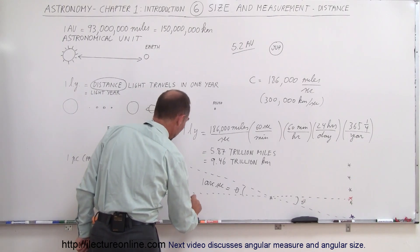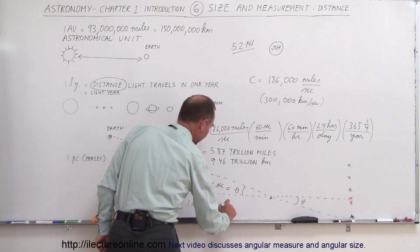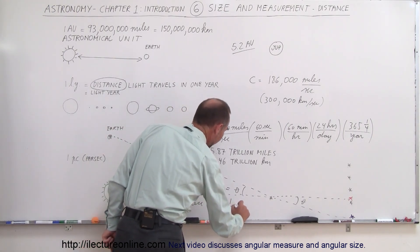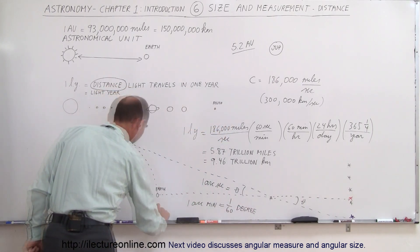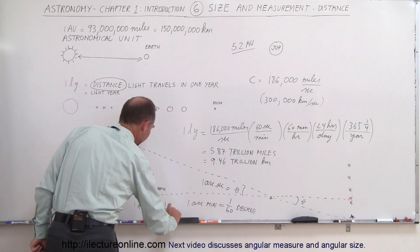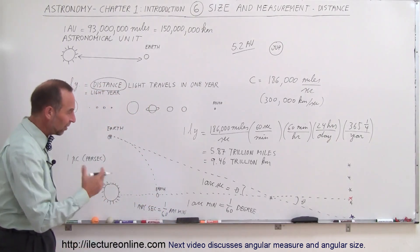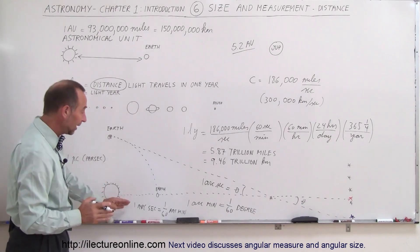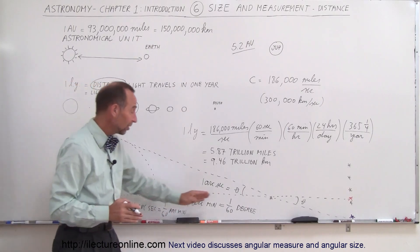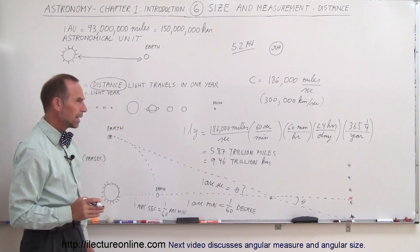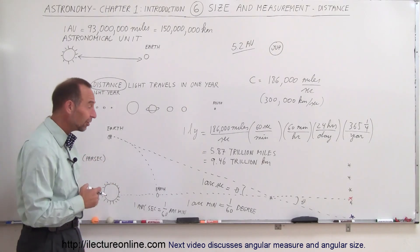And so we'll talk about it a little bit later, but let's say that one arc minute is equal to one-sixtieth of a degree. And one arc second is equal to one-sixtieth of an arc minute. Kind of like there's 60 seconds in a minute and there's 60 minutes in an hour. Well, an arc second is a measure of angle that is one-sixtieth of an arc minute, and an arc minute is a measure of angle that's one-sixtieth of one degree.